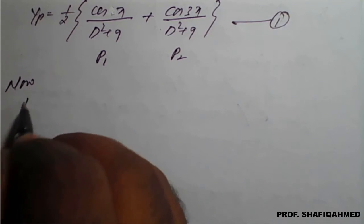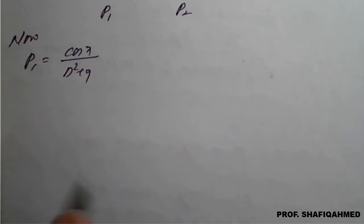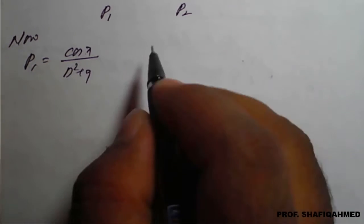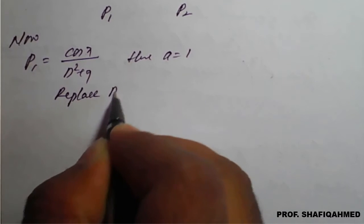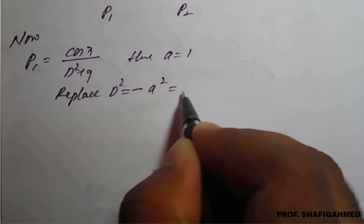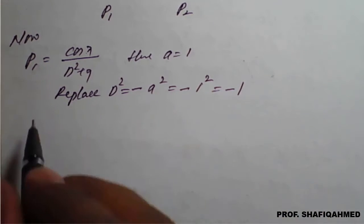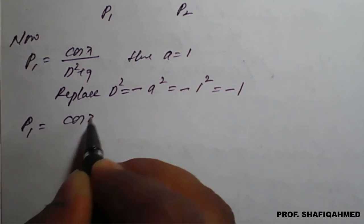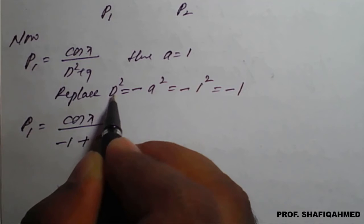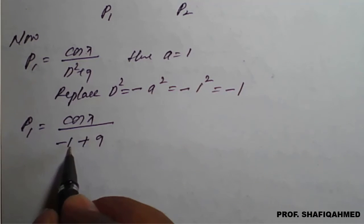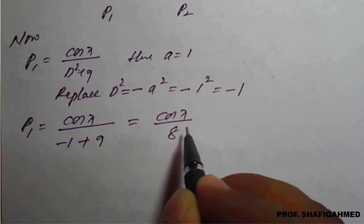For P1 = cos(x)/(D² + 9): the coefficient of x is 1, so a = 1. We replace D² with −a² = −1². So P1 = cos(x)/(−1 + 9) = cos(x)/8. We got the value of P1.